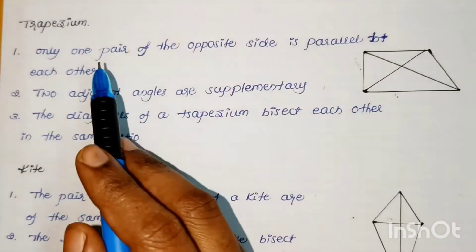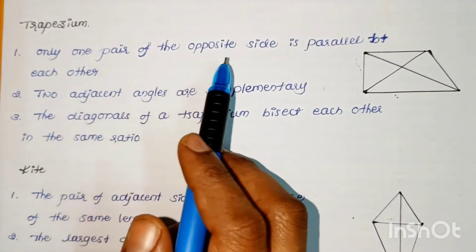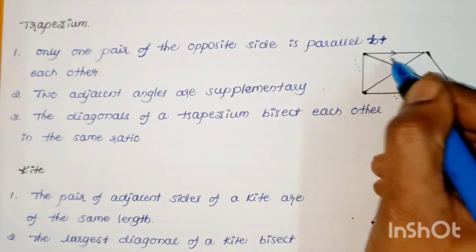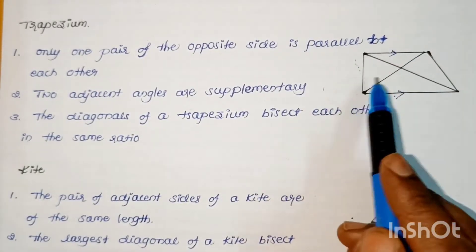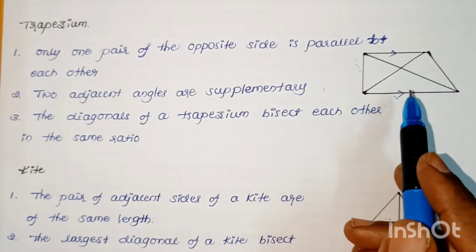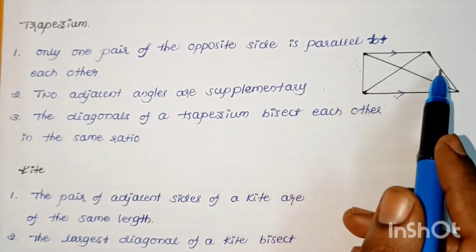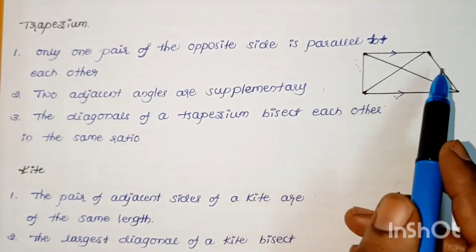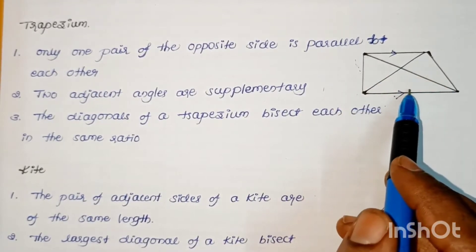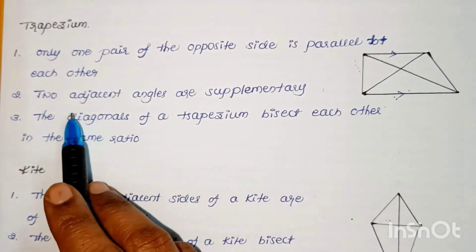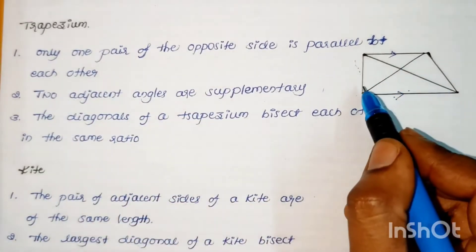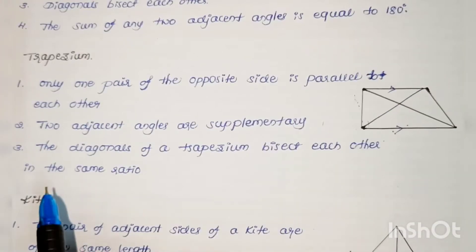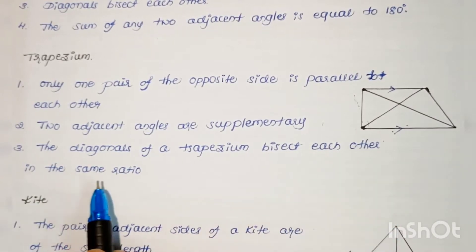In a trapezium, only one pair of opposite sides is parallel to each other. The other two sides may or may not be equal. If they are equal, that trapezium is called an isosceles trapezium; otherwise it is simply called a trapezium. Two adjacent angles are supplementary, meaning their sum equals 180 degrees. The diagonals of a trapezium bisect each other in the same ratio.